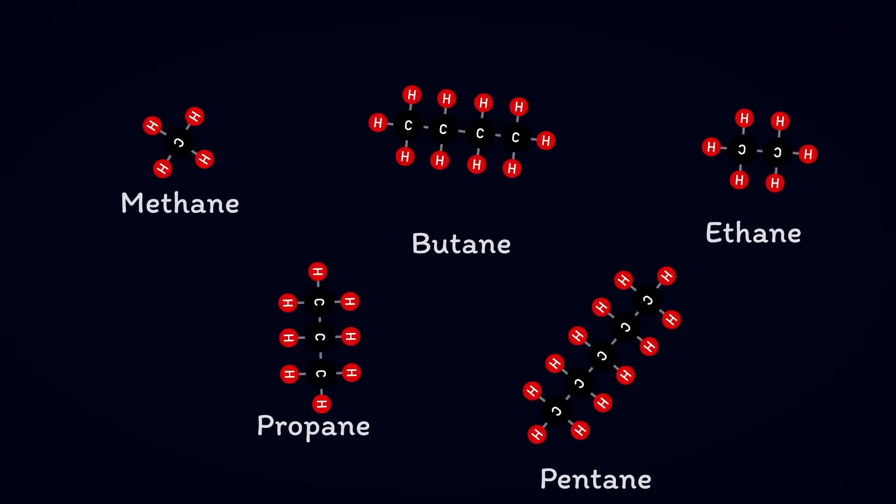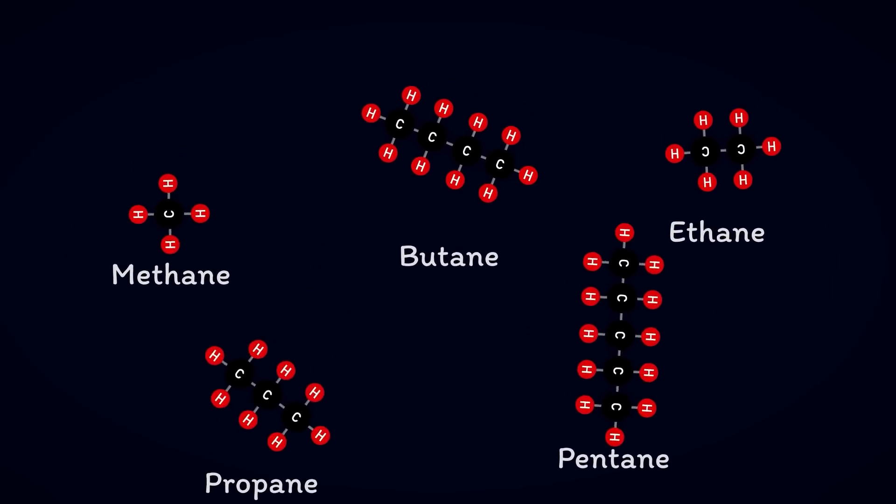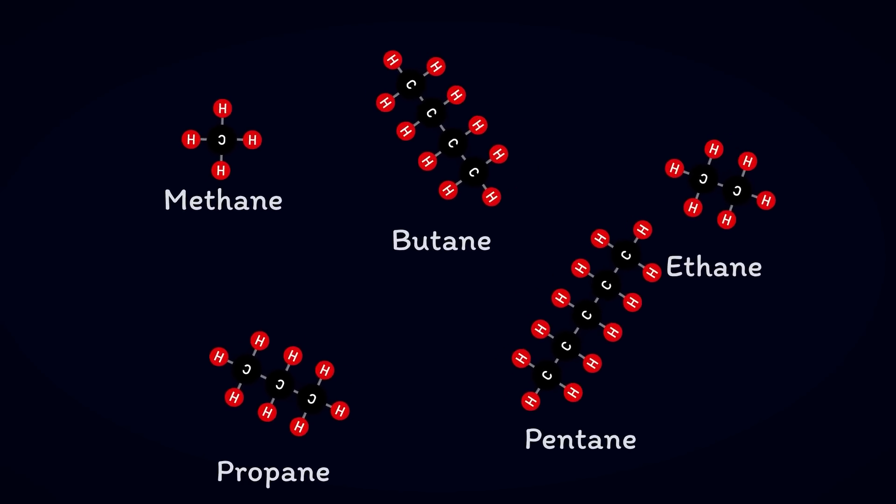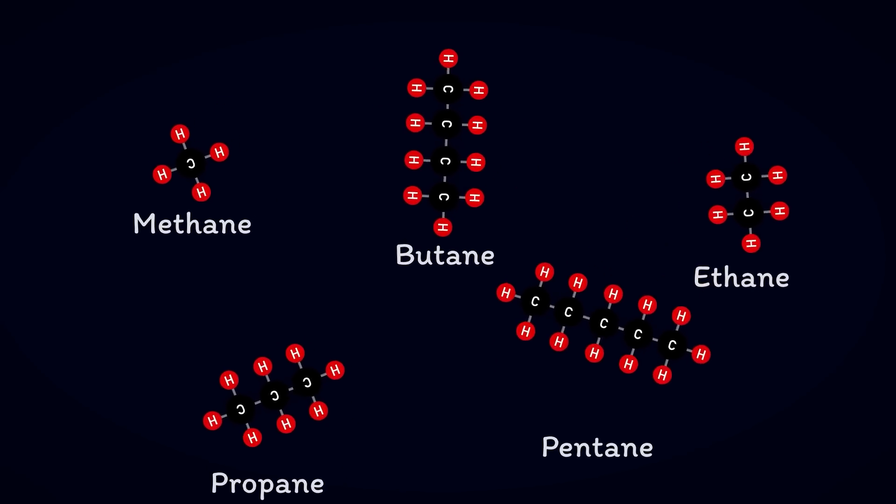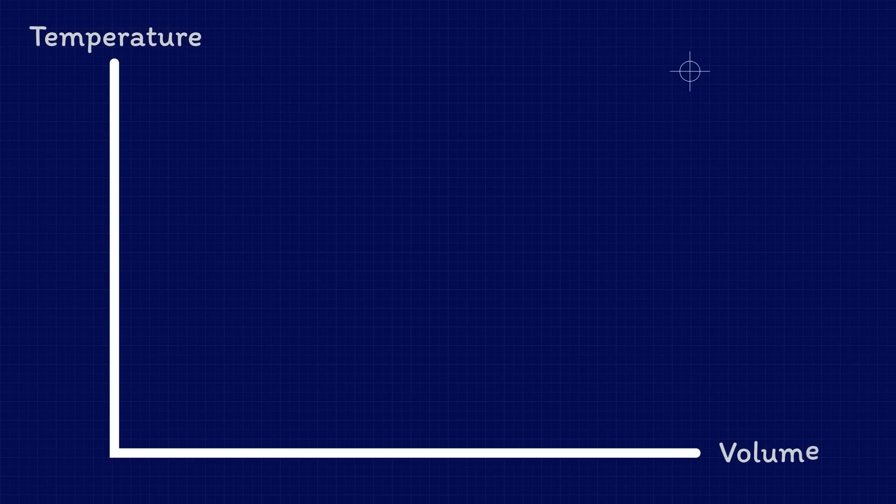As you can see the chemical composition of each is different but they do all share similar characteristics in that they all exist in gaseous form in normal atmospheric conditions meaning they take up too much space to be economical to transport by sea. Fortunately though there are some very simple laws of physics that we can use to reduce the volume of a gas.